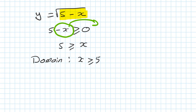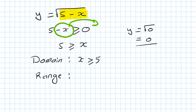And for range — the smallest value of x is 5. We substitute that in, so y must be square root of 0, which is 0. So 0 is the smallest number, because substituting the smallest value of x, which is 5, gives me 0. So y must be greater or equal to 0.